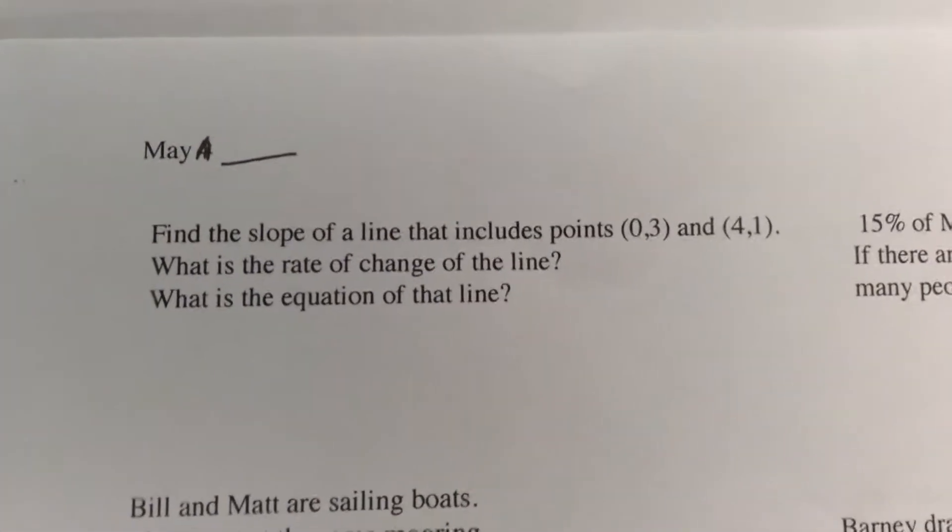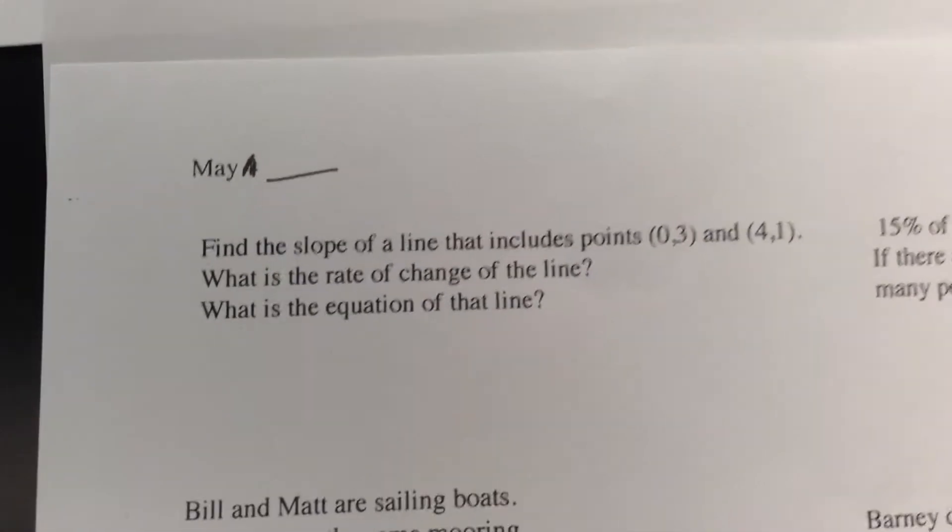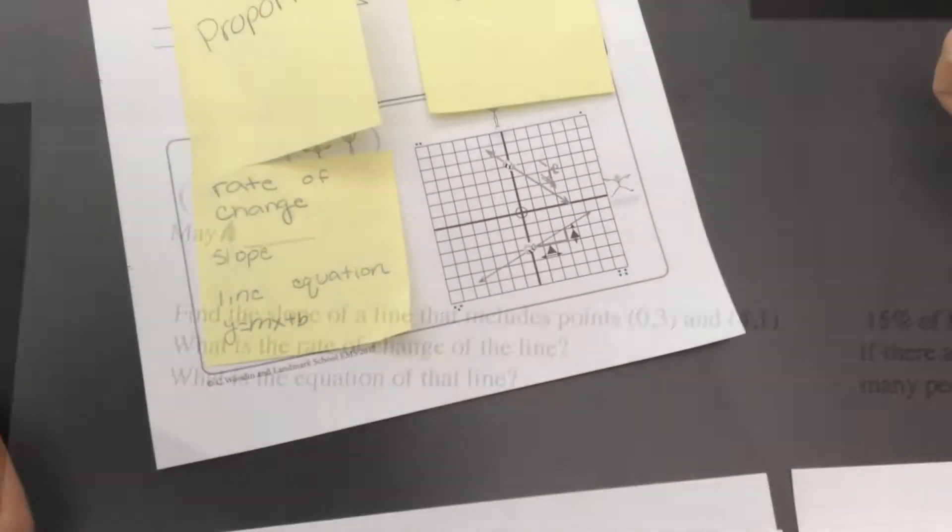Find the slope of a line that includes points (0,3) and (4,1). What is the rate of change of the line? What is the equation of the line? Can you find the right post-it?